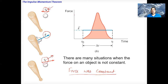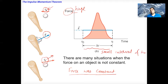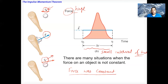In this case, the baseball bat exerts a large amount of force for a small interval of time — the force is huge over a small interval of time. Since the force is not constant, if you want to study the overall effect of a force acting over time, we need to define a new quantity called impulse.